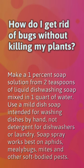How do I get rid of bugs without killing my plants? Make a one percent soap solution from two teaspoons of liquid dishwashing soap mixed in one quart of water. Use a mild dish soap intended for washing dishes by hand, not detergent for dishwashers or laundry soap. This spray works best on aphids, mealybugs, mites, and other soft-bodied pests.